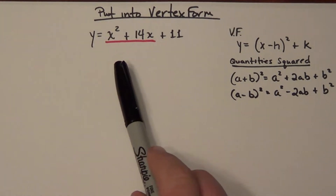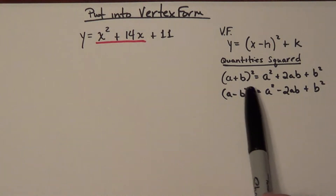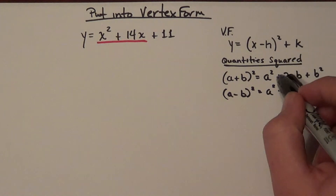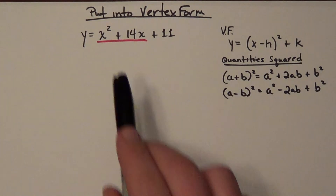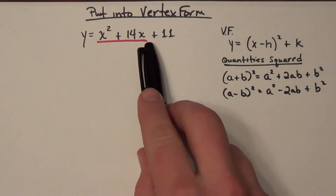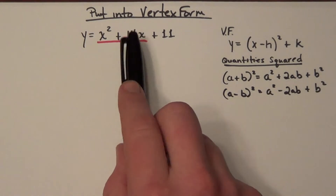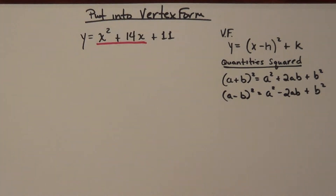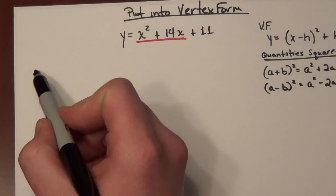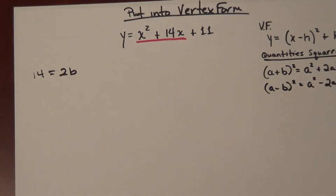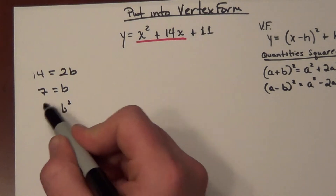I'm matching these first two terms to the a plus b quantity squared form, simply because I have a term squared plus I'm adding — same pattern here. The a is being substituted with x, so I have 2b equals 14, meaning 14 must be twice what b is. So I write the equation 14 equals 2 times b. Solving that, we get b equals 7 when I divide both sides by 2. Therefore b squared must be equivalent to 49.